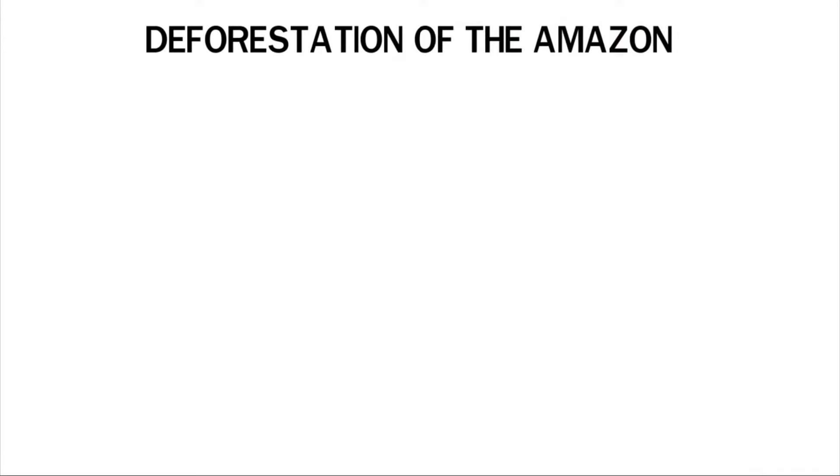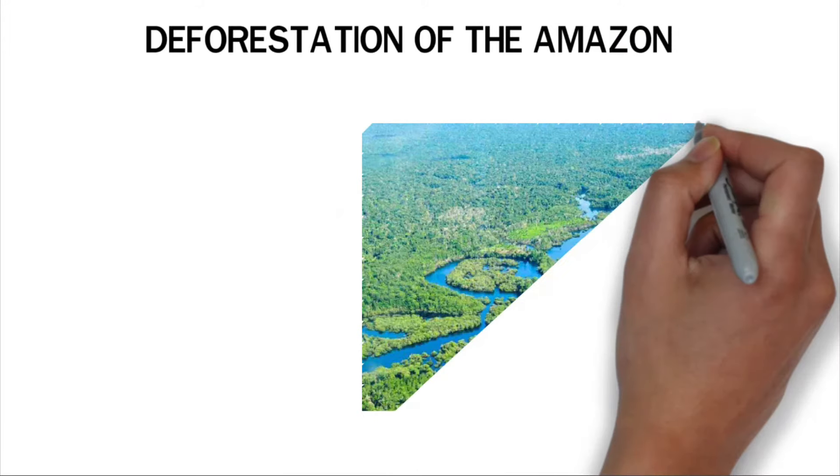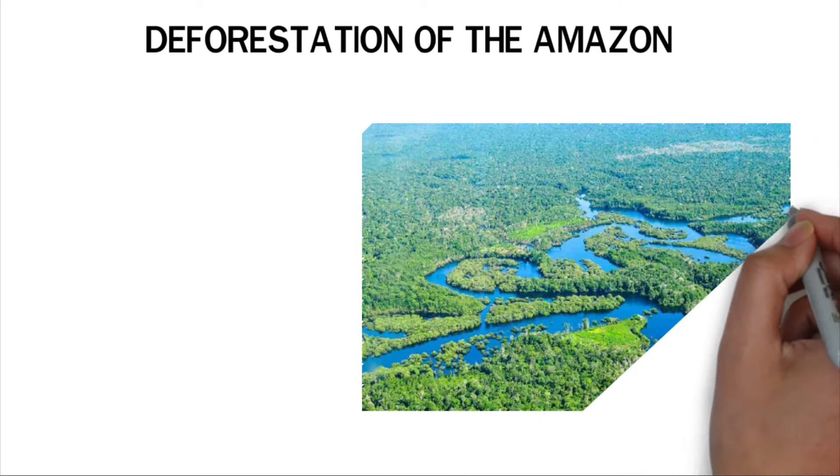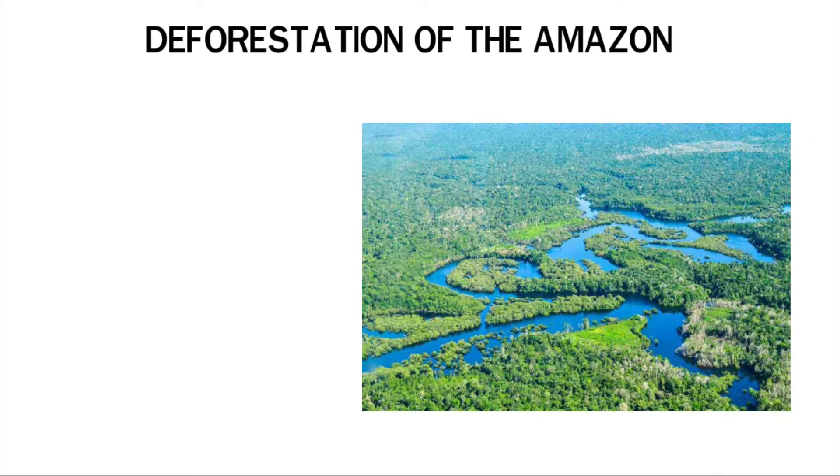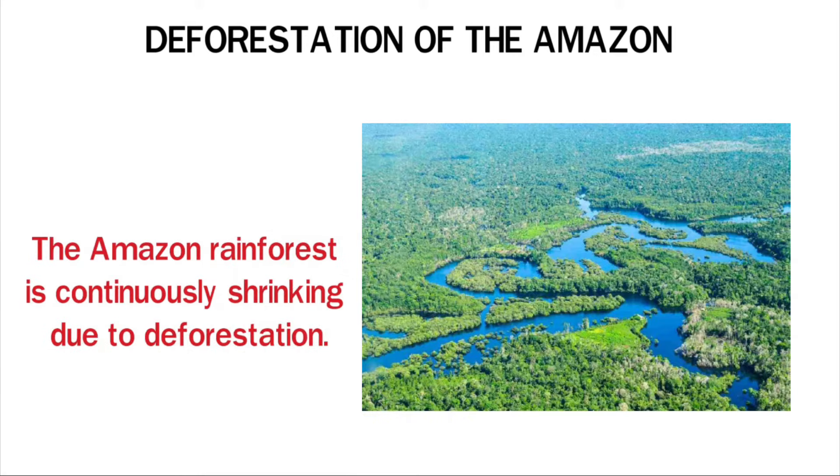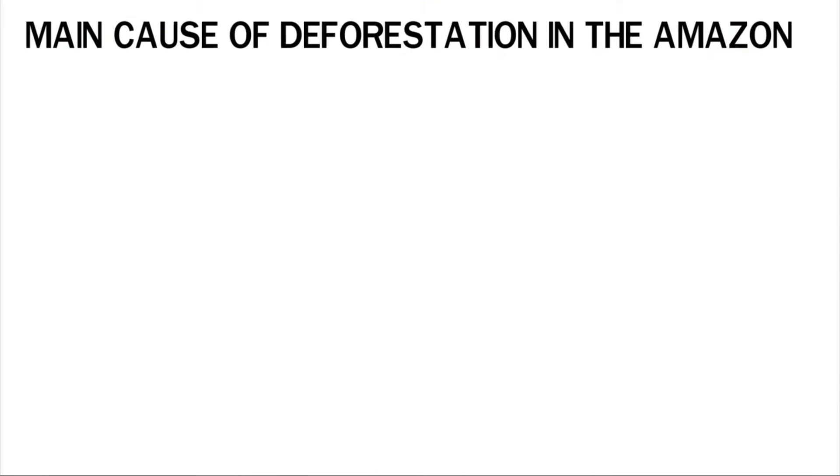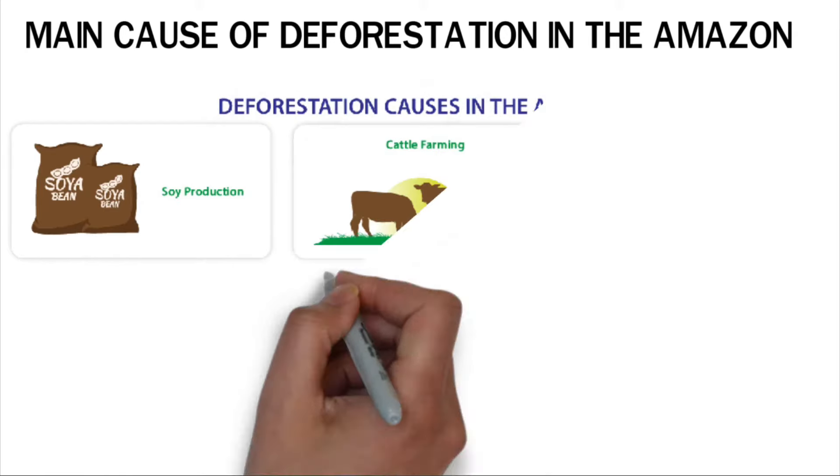Deforestation of the Amazon. The Amazon is undoubtedly the largest rainforest in the world. It covers less than four percent of the earth's surface and creates approximately twenty percent of the earth's oxygen. The Amazon rainforest is continuously shrinking due to deforestation.